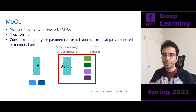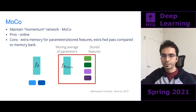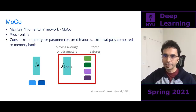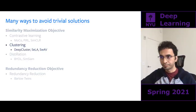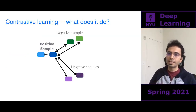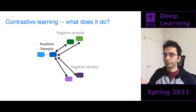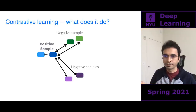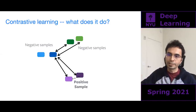That concludes the explanation of contrastive methods. Now let's move on to the second way of avoiding trivial solutions: clustering-based methods. To do that, let's first relate how contrastive learning and clustering are related to one another.